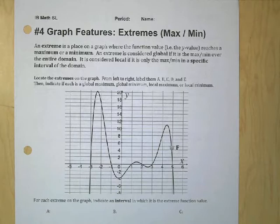Locate the extremes on the graph and label them A, B, C, D, E. So they're giving you a hint right there that there's five of them. So what are there five of? So extremes means a max or a min. So basically you're looking for peaks and valleys.